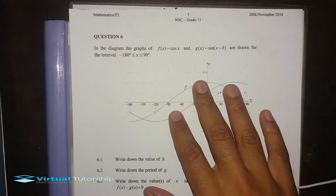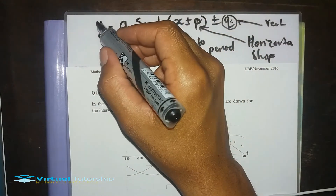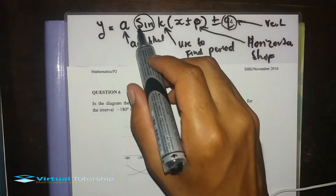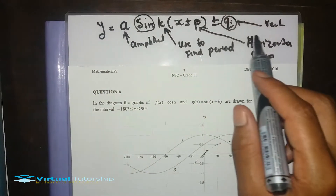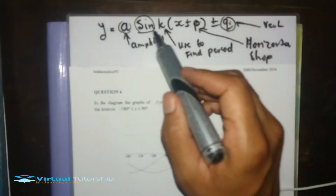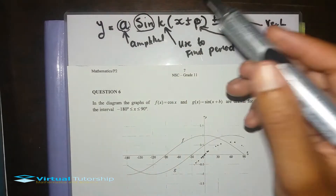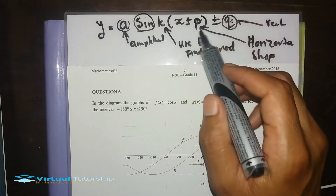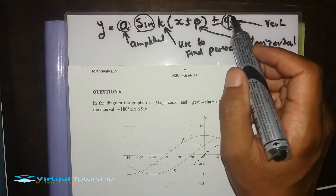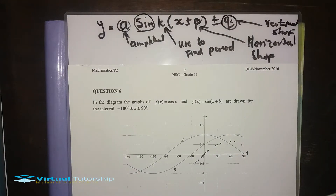Before you tackle the question, prepare a generic equation. When you say a sine function it can also be a cosine function or a tan function, but for this discussion we'll use sine. So: a is the amplitude, k is used to find the period of the graph, p is the horizontal shift, and q is the vertical shift.